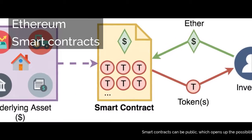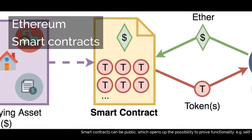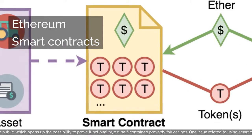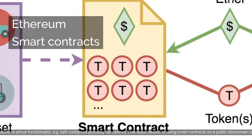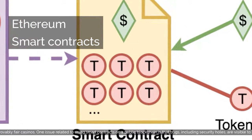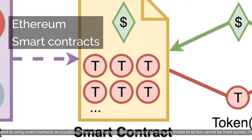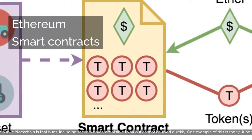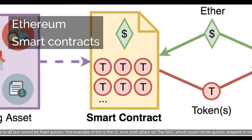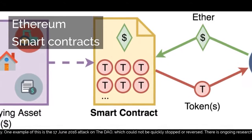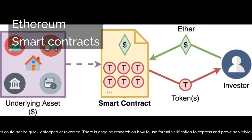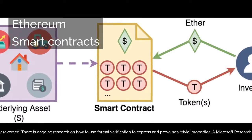Smart Contracts can be public, which opens up the possibility to prove functionality, for example self-contained provably fair casinos. One issue related to using smart contracts on a public blockchain is that bugs, including security holes, are visible to all but cannot be fixed quickly. One example of this is the June 17, 2016 attack on the DAO, which could not be quickly stopped or reversed.